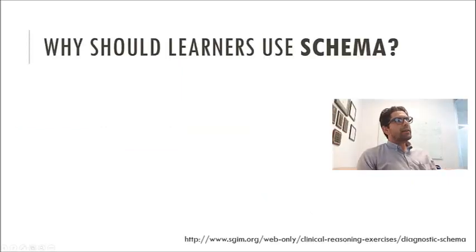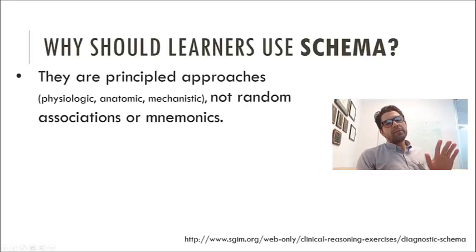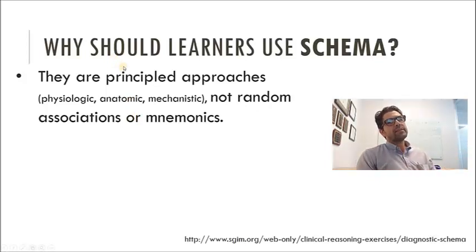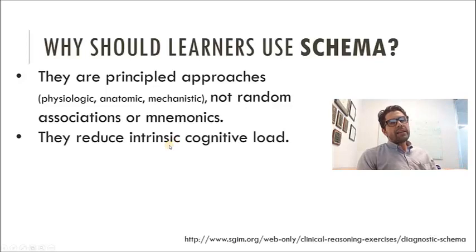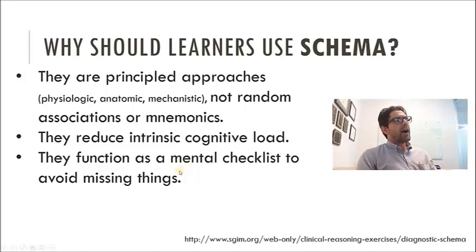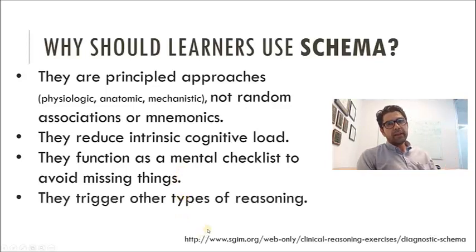Why should we encourage learners to use schema? Because they are principled approaches, not random associations or mnemonics. They are physiologically, anatomically, or mechanistically sound. This is not just memorizing random associations — there's a mechanism to these disease processes. A mechanistic approach reduces intrinsic cognitive load and makes thinking more efficient. Furthermore, schema function as a mental checklist to avoid missing things — I'll quickly run through my scheme to make sure I'm not missing any arm. And they trigger other types of reasoning: once I know where I am in the scheme, I can use other reasoning strategies to solve the case.